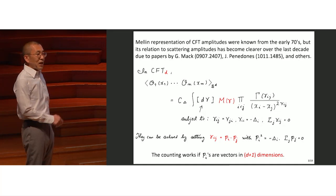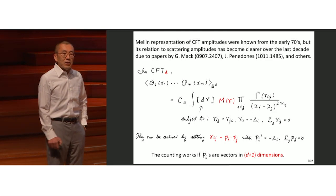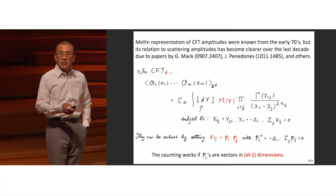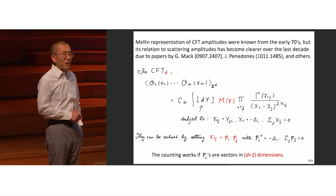There are various kinematic constraints because you are calculating this amplitude. If you count the number of independent Mellin variables subject to this constraint, you find that this parametrization works — the Jacobian is invertible — provided that these p's are actually momenta in D plus one dimensions.